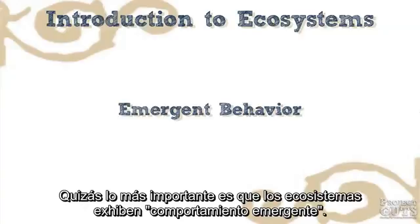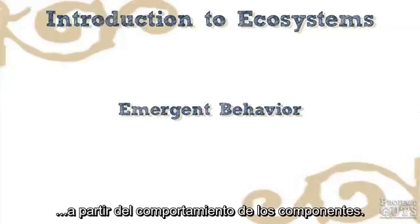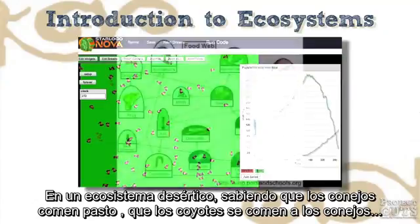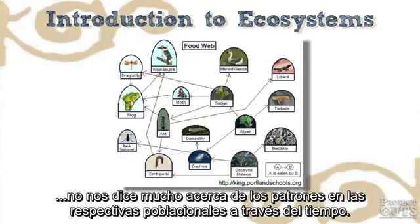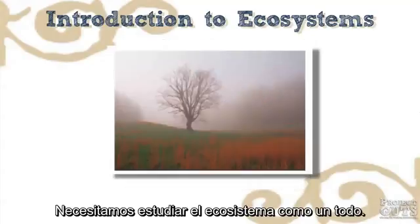Probably most important, ecosystems often demonstrate emergent behavior. This is related to the first point, where the overall behavior is not obvious from the component behavior. In a high-desert ecosystem, simply knowing that rabbits eat grass, coyotes eat rabbits, and mountain lions eat rabbits and coyotes doesn't tell us much about the patterns in the respective populations over time. We really need to study the ecosystem as a whole.